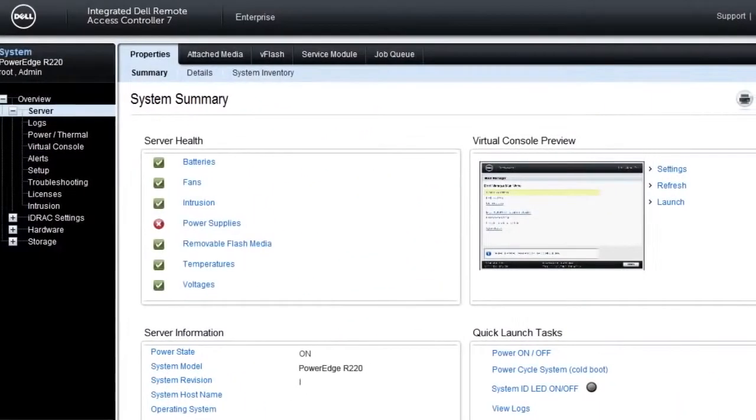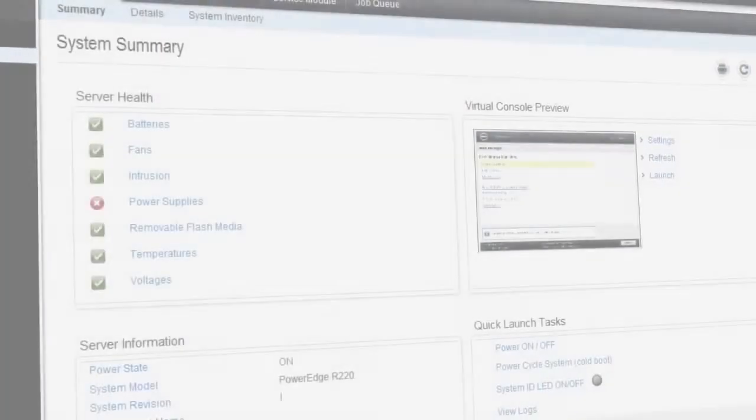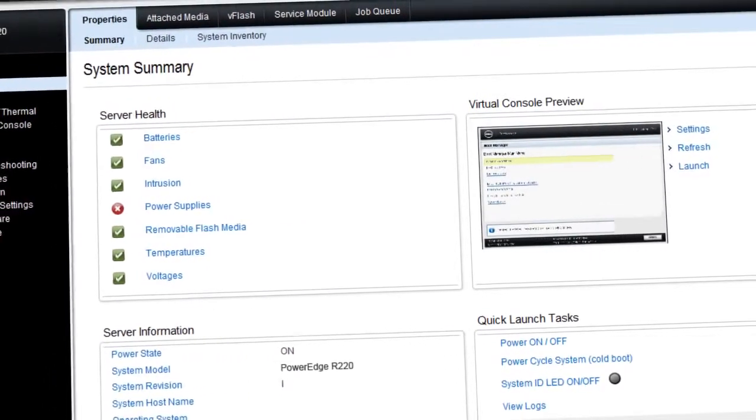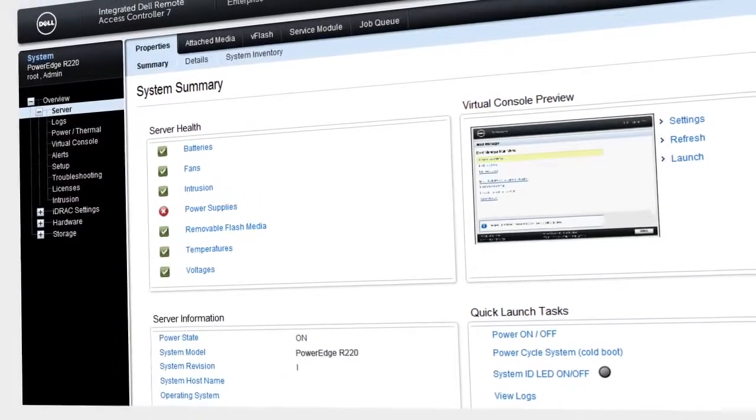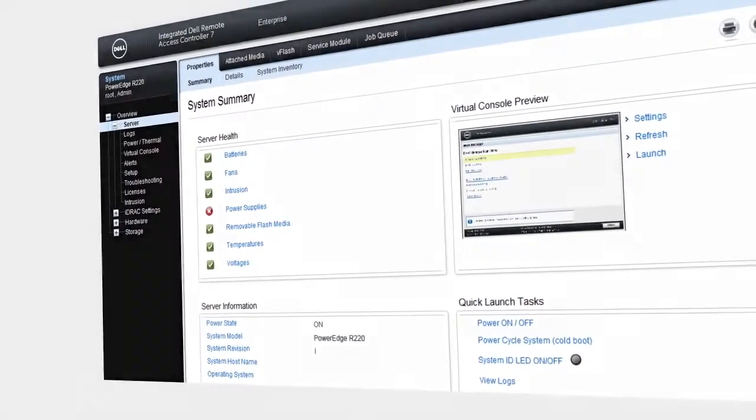OpenManage tools are unified into comprehensive solutions, helping to reduce complexity and the potential for error. In addition, the embedded, agent-free management used on the R220 and other PowerEdge servers helps to reduce the number of steps taken to perform tasks, which in turn saves time and saves money.